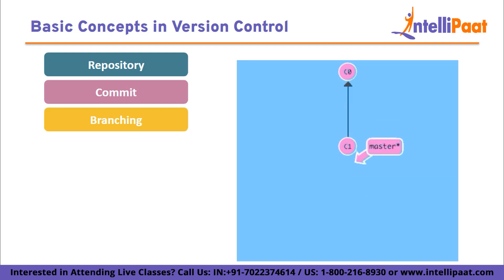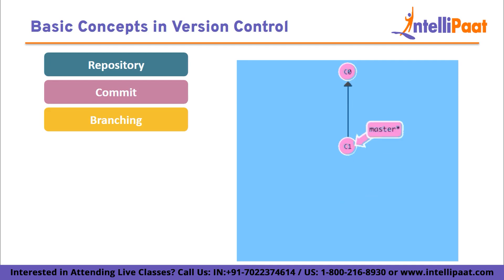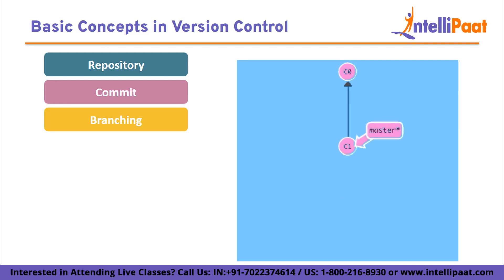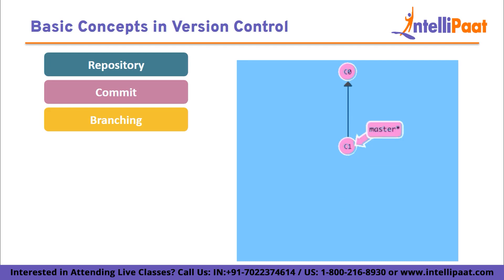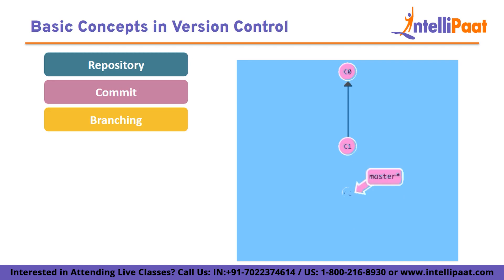Branching: Branching allows the creation of separate lines of development within a project. It enables parallel work on different features or bug fixes, independent of the main code. Branches can be created, merged, or deleted as needed.